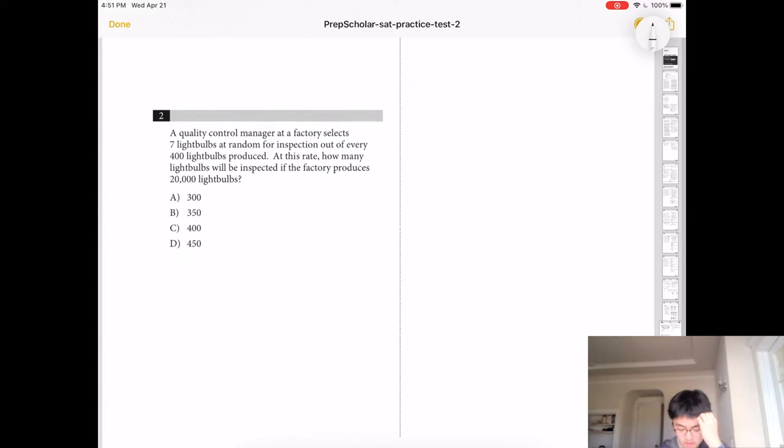Number 2, select 7 out of 400, so it's 2,000. So we know that 2,000 divided by 400 equals 50, and 7 times 50 is 350. So the answer is B.